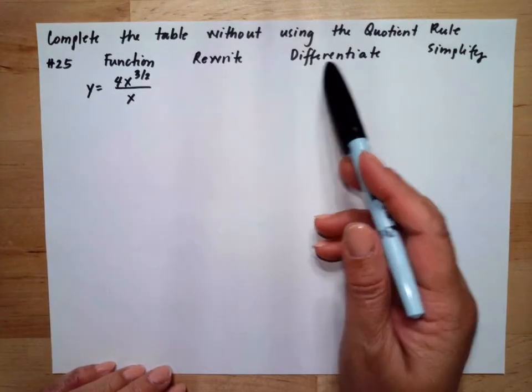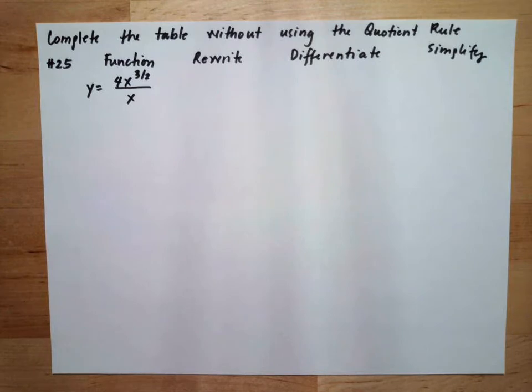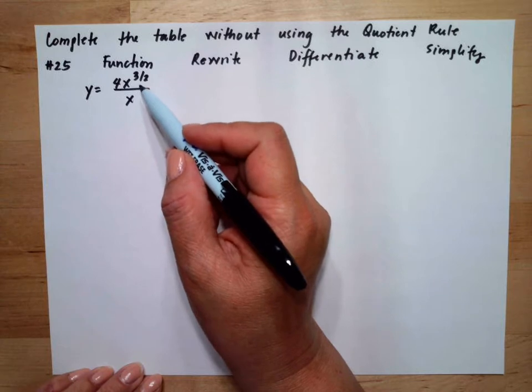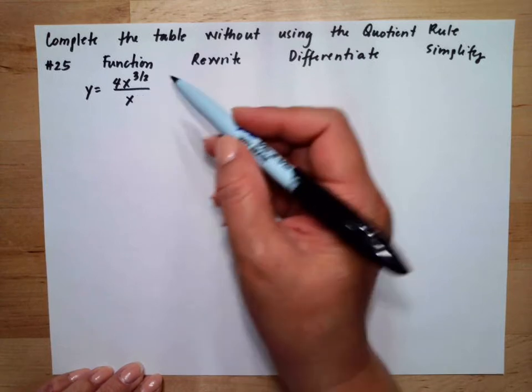Complete the table without using the quotient rule. Here we have x in both the denominator and numerator, but we can write this as